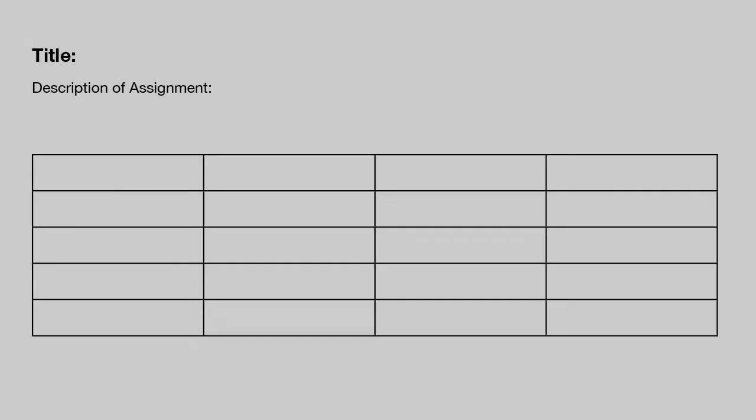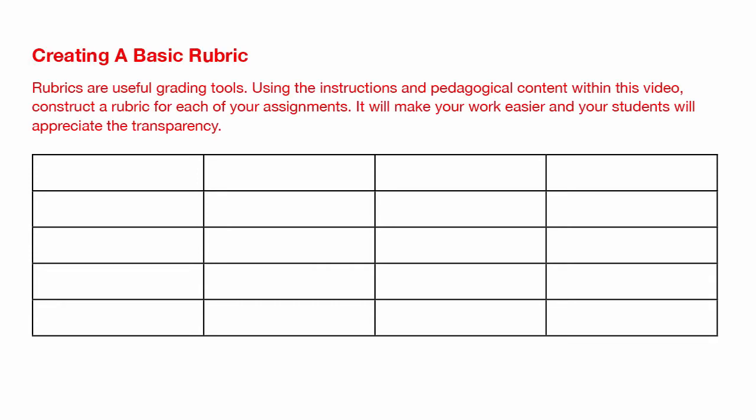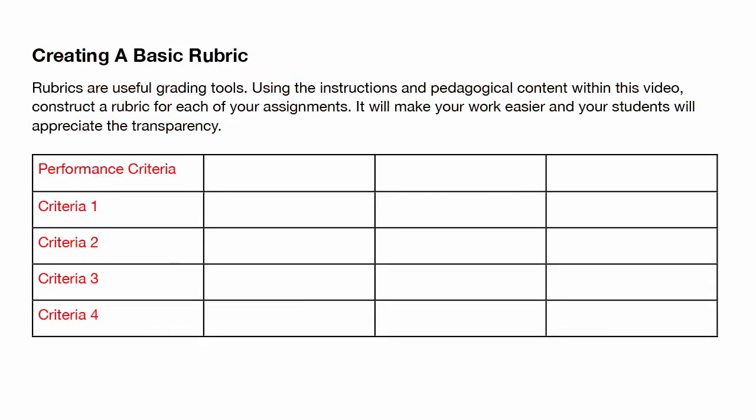A rubric resembles a grid and consists of four parts. The first part of the rubric is a description of the assignment. It is recommended that you cut and paste the assignment directly from Blackboard for wording consistency. The second part is the performance criteria, where the assignment is broken down into individual grading components.